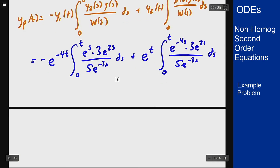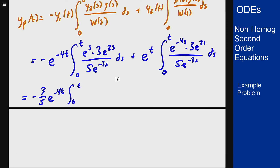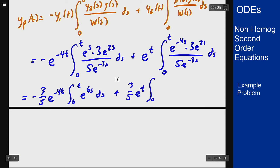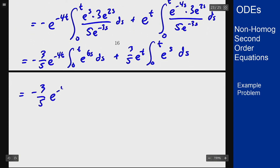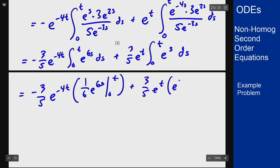Simplifying the expressions, we move the constants 3 and 5 out of the integrals. The first term becomes negative 3 fifths times e to the minus 4t times the integral from 0 to t of e to the 6s, and the second term is 3 fifths e to the t times the integral from 0 to t of e to the s. Integrating gives negative 3 fifths e to the minus 4t times one sixth e to the 6s from 0 to t, plus 3 fifths e to the t times e to the s from 0 to t.